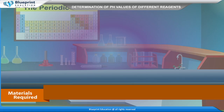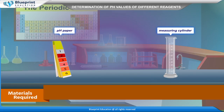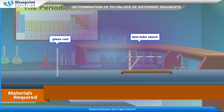The materials required are hydrochloric acid of different concentrations: 0.1 mol/L, 0.01 mol/L, and 0.001 mol/L. Other materials include pH paper, a measuring cylinder, universal indicator, test tubes, a glass rod, a test tube stand, etc.